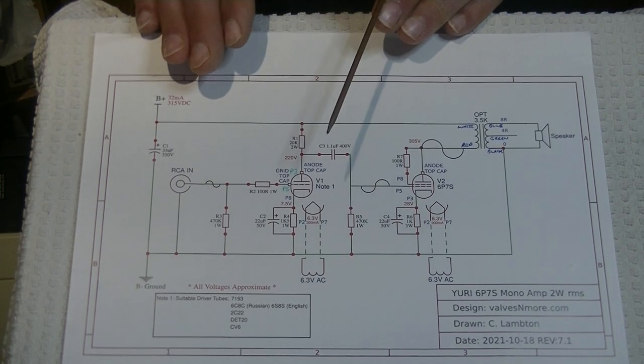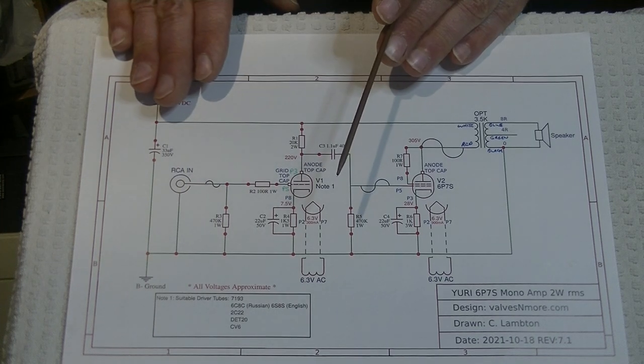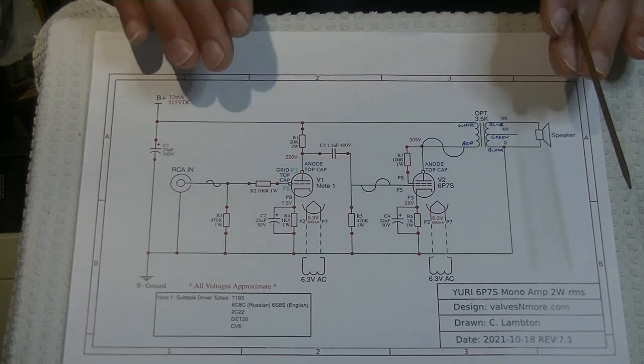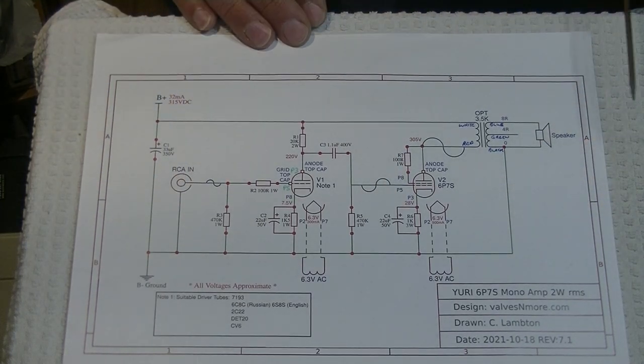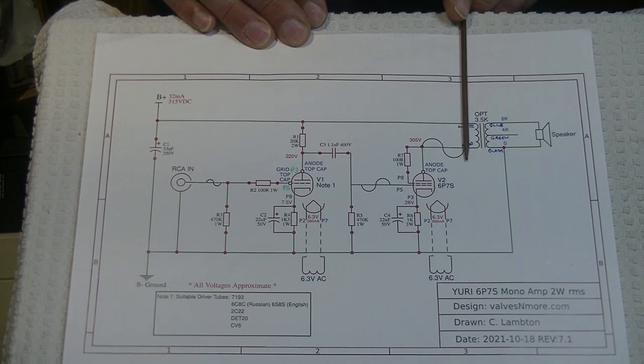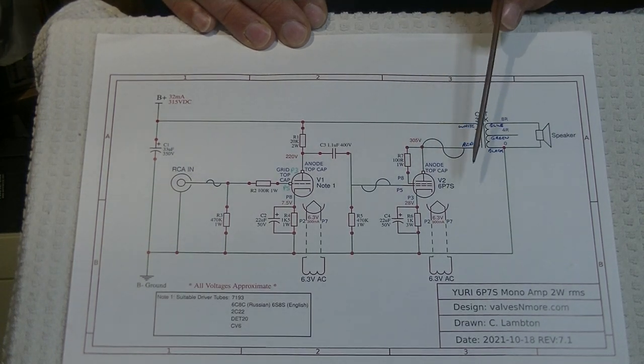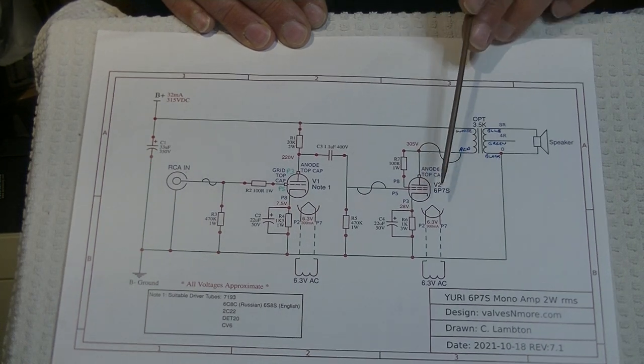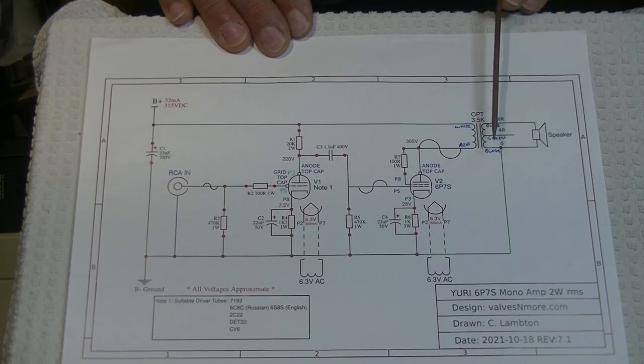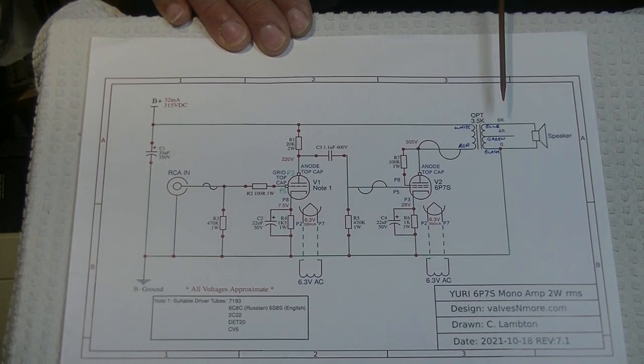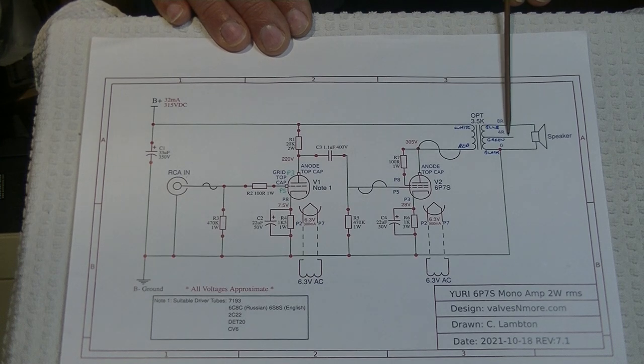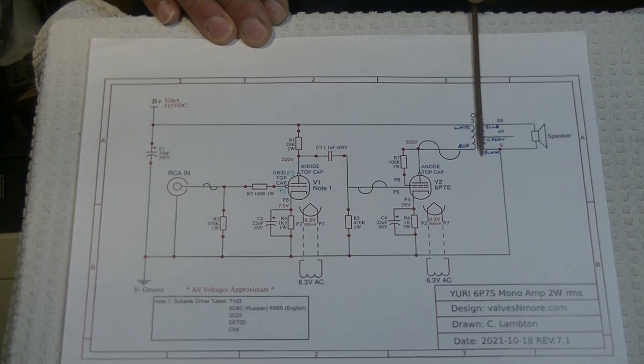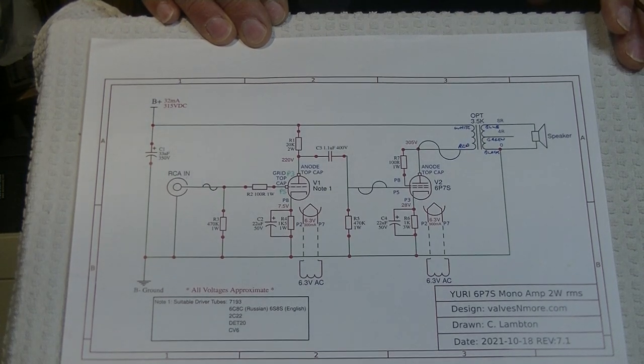Remember, for most stages we want voltage gain when we're bringing a small signal up. But when we're at the output stage, we don't want voltage, what we want is current. And that's what our output transformer does so well for us. It takes a high current, high voltage, high impedance signal, and it reduces it to a low impedance, in this case 8 ohms or 4 ohms, high current, very low voltage, through the magic of our output transformer.